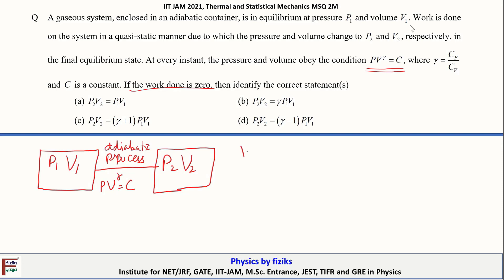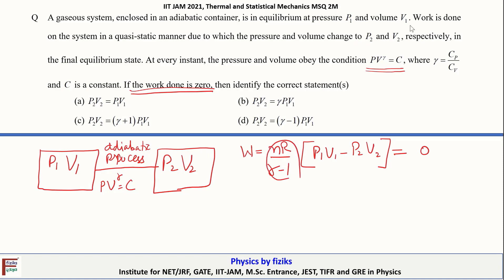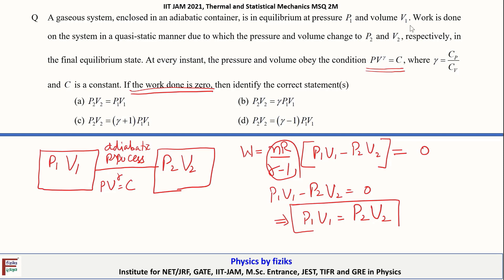During an adiabatic process, the work done on n moles of gas involves P1V1 minus P2V2. For this to equal zero, we need P1V1 = P2V2. Therefore the correct option is A.